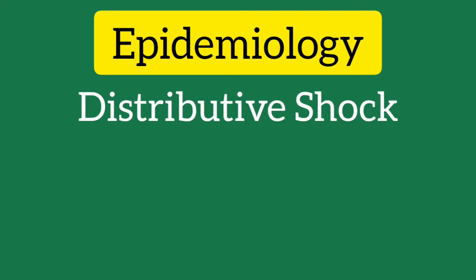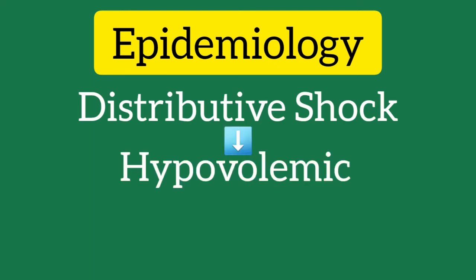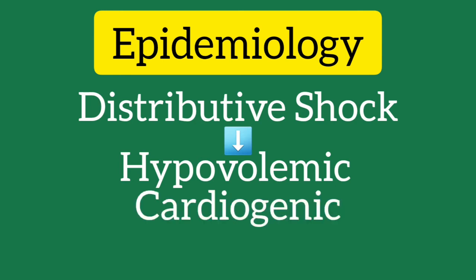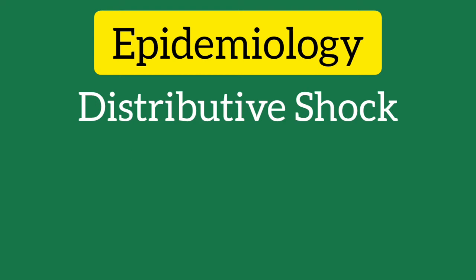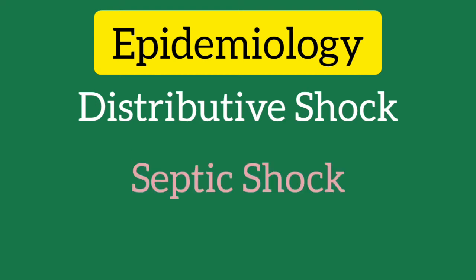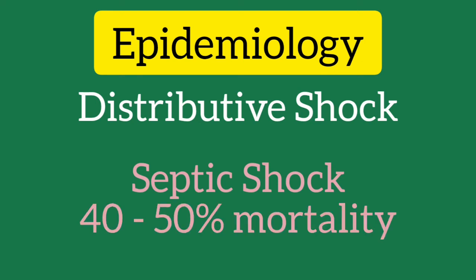Of the four broad categories, distributive shock is the most common type, followed by hypovolemic and cardiogenic shock. Obstructive shock is relatively less common. The most common type of distributive shock is septic shock, which has a mortality rate between 40 to 50%.